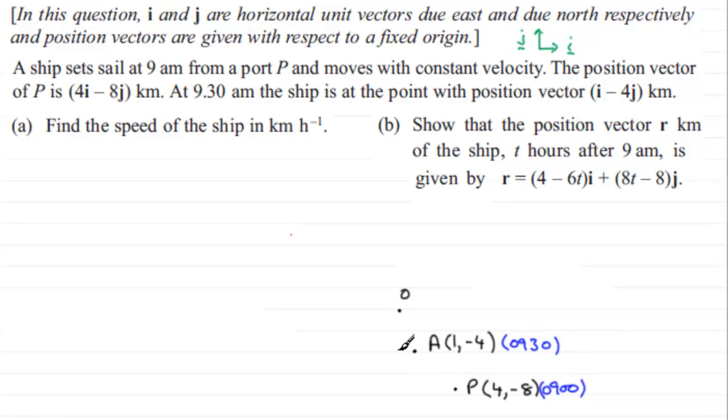Right. So that means our ship is moving off in this direction. Something like this. From here it's just moving along on a line. Something like that. Now to get the speed of the ship in kilometers per hour, what I need to do is find out what the velocity is. And speed remember is the magnitude of velocity.